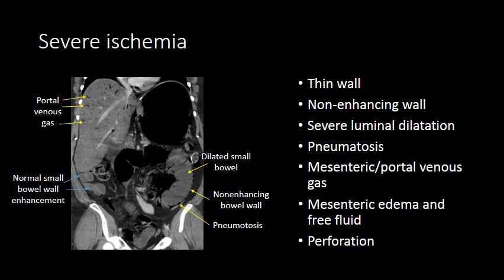Portal venous gas can be distinguished from pneumobilia due to its peripheral location. The blood flow within the portal veins flows out toward the periphery of the liver, pushing gas toward the periphery. In the setting of pneumobilia, the bile flows toward the common bile duct or center of the liver, pushing the pneumobilia more centrally. So portal venous gas is peripheral and pneumobilia is more central.